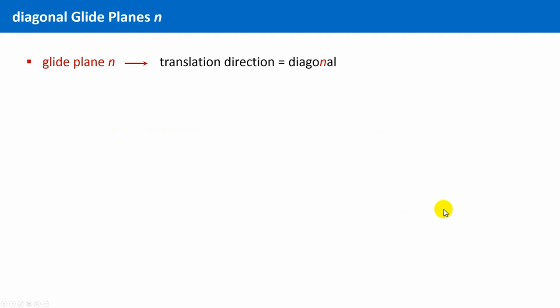Let's begin with the glide plane N. In contrast to the three simple glide planes A, B and C, in which the translation directions are always along one of the axis of the crystallographic coordinate system, here the translation direction is diagonal. This is how I remember this, N as in diagonal. And this means we have to translate the object after the reflection in two directions.